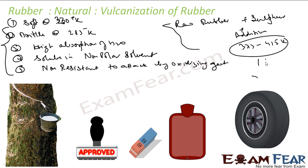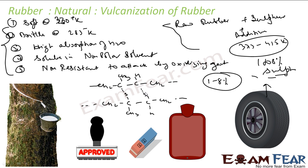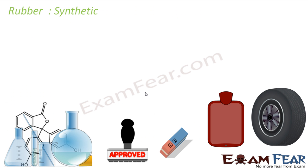In this type of rubber, we typically use 1 to 8 percent of sulfur by mass. Because if we use more sulfur, it will actually destroy the elastic property of the rubber. The sulfur added creates cross-links that make the rubber hard, so it can be used to make tires. We have to use sulfur only in the 1 to 8 percent range.